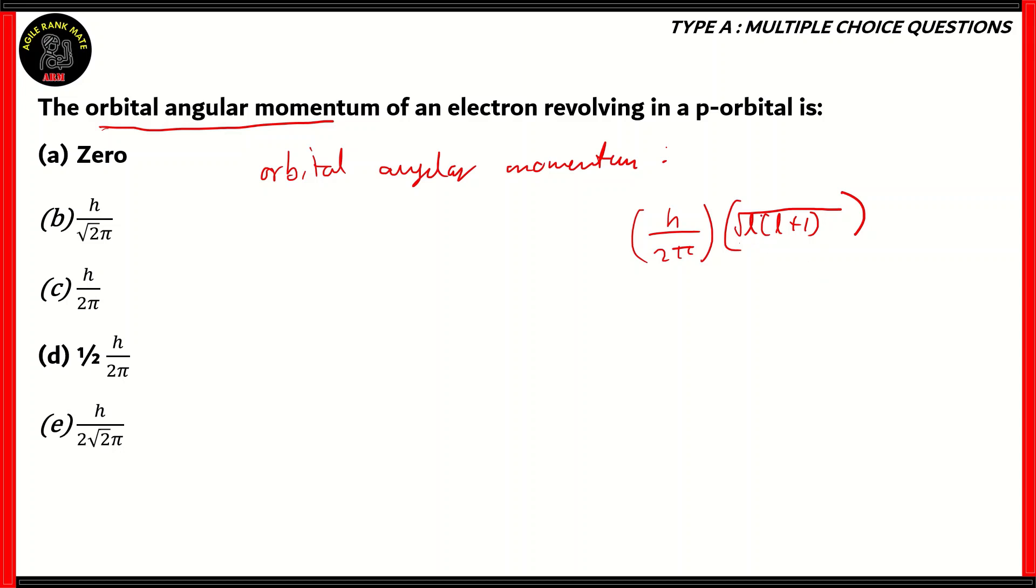Now, l here represents the azimuthal quantum number, and the azimuthal quantum number represents sub-shells. Here, we have an apt example of using this formula. We are having a p-orbital where the electron is revolving, so the azimuthal quantum number here equals 1. When you apply that into the formula, you get h by 2 pi times 1 into 1 plus 1, which is equal to h by 2 pi times under root of 2. 1 plus 1 gives you 2. 2 times 1 gives you 2.